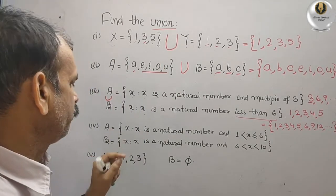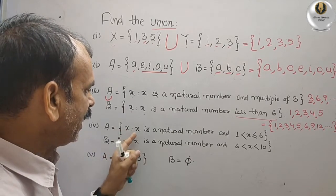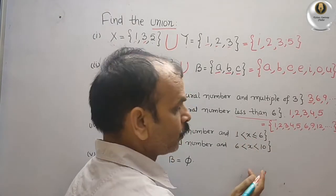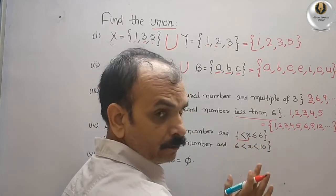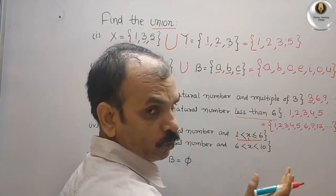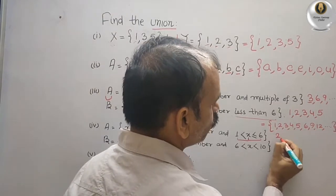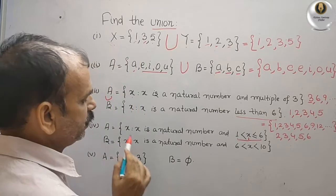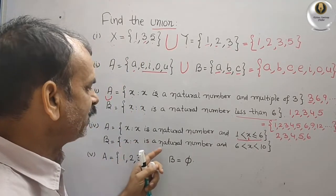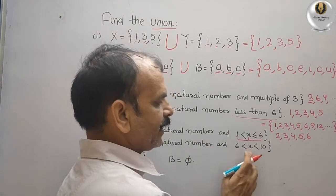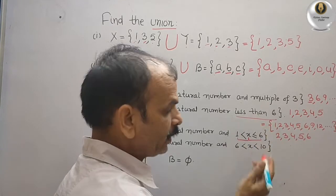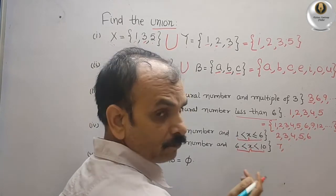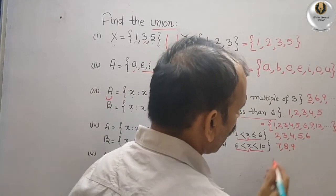Next: A is the set of all x such that x is a natural number and 1 < x ≤ 6. So x should be greater than one and up to and including six, meaning A = {2, 3, 4, 5, 6}. B is the set of all x such that x is a natural number and 6 < x < 10. So x should be greater than six and less than ten, meaning B = {7, 8, 9}.